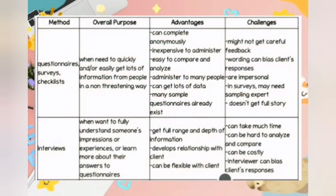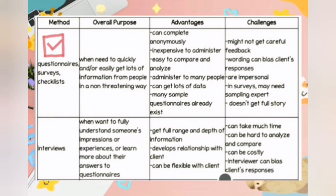To elaborate more, here are the methods with their overall purpose, advantages, and challenges. First, questionnaires, surveys, and checklists. Overall purpose: to quickly and easily get lots of information from people in a non-threatening way. Advantages: can be completed anonymously, inexpensive to administer, easy to compare and analyze, can be administered to many people, can get lots of data, and many sample questionnaires already exist. Challenges: might not get careful feedback, wording can bias clients' responses, are impersonal, and surveys may need a sampling expert and don't get the full story.